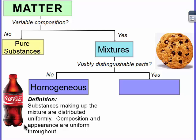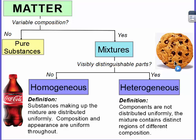If we can see the different parts, like a chocolate chip cookie, then it's heterogeneous. The components are not distributed uniformly. The mixture contains distinct regions of different composition. If I take a bite of the chocolate chip cookie, every bite is not exactly the same. I can see the chocolate, I can see the cookie piece. So if you can see all the different pieces and it's not uniform, then it's heterogeneous.